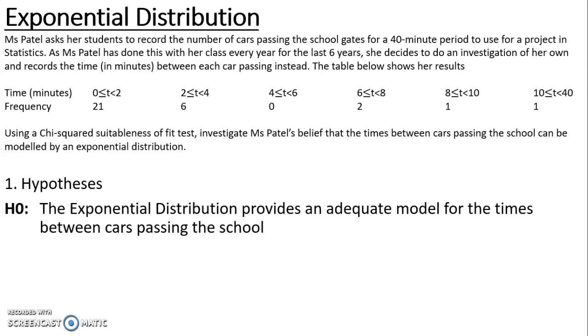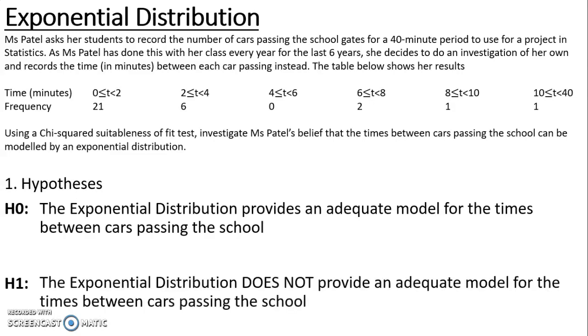The alternative hypothesis is the reverse of that: the exponential distribution does not provide an adequate model for the times between cars passing the school.